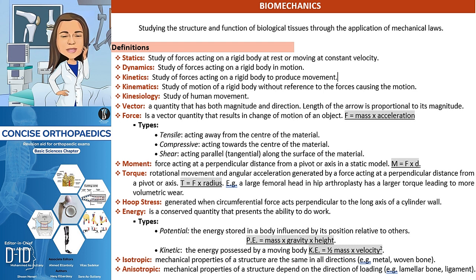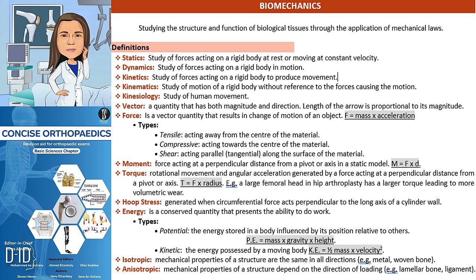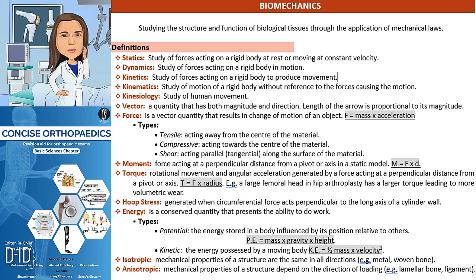Moment is a force acting at a perpendicular distance from a pivot or axis in a static model. Torque is the rotational movement and angular acceleration generated by a force acting at a perpendicular distance from the pivot or axis. For example, a large femur head in hip arthroplasty can lead to more volumetric wear due to its larger torque.